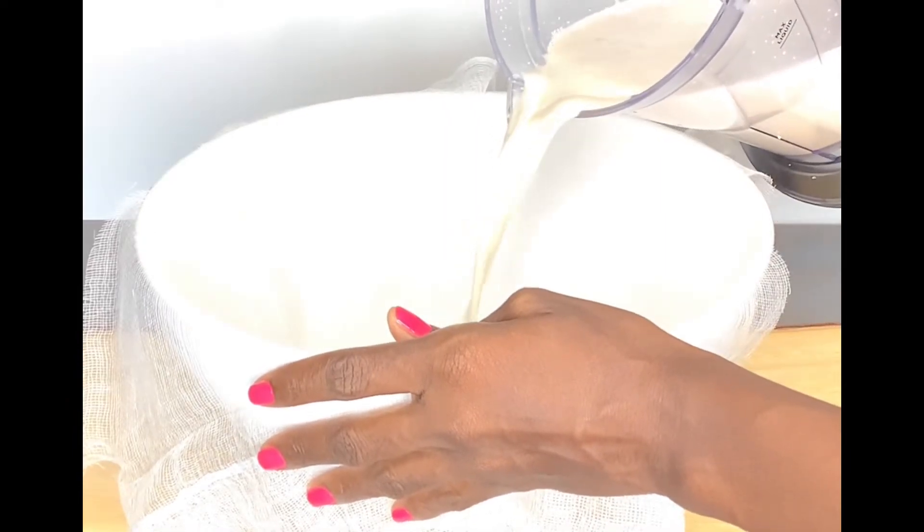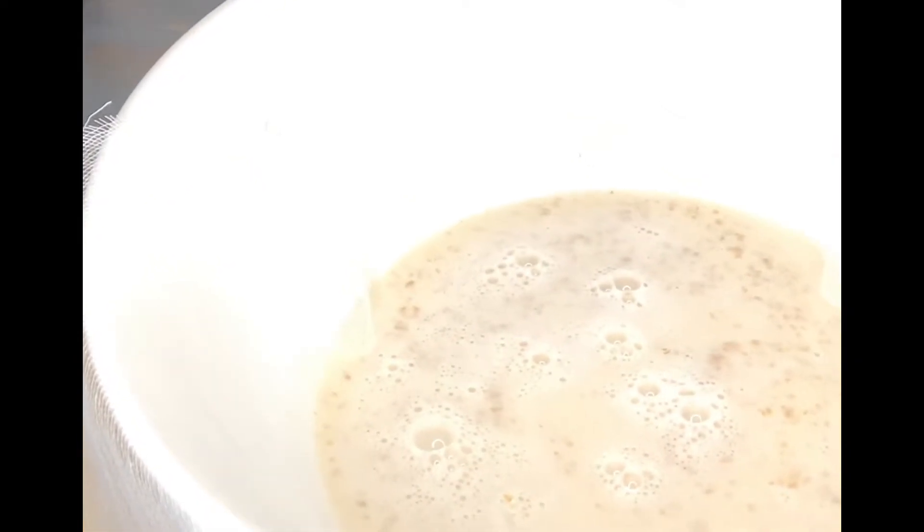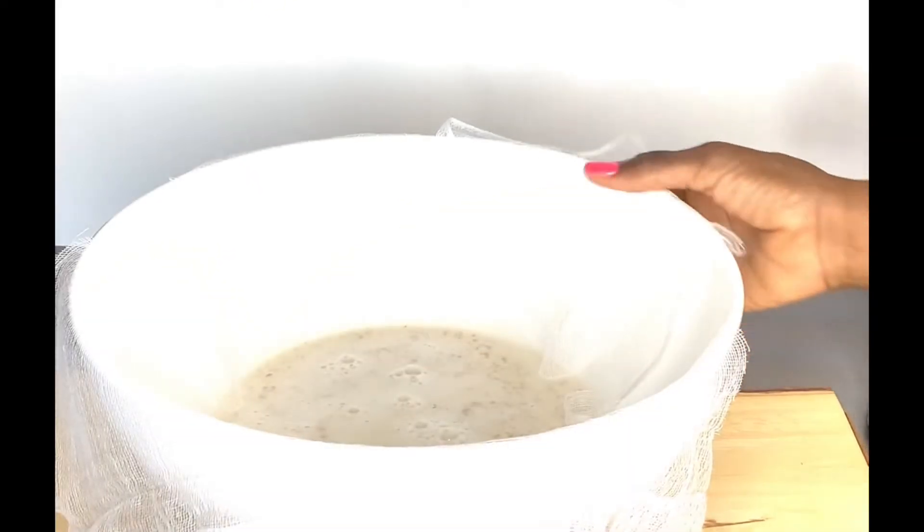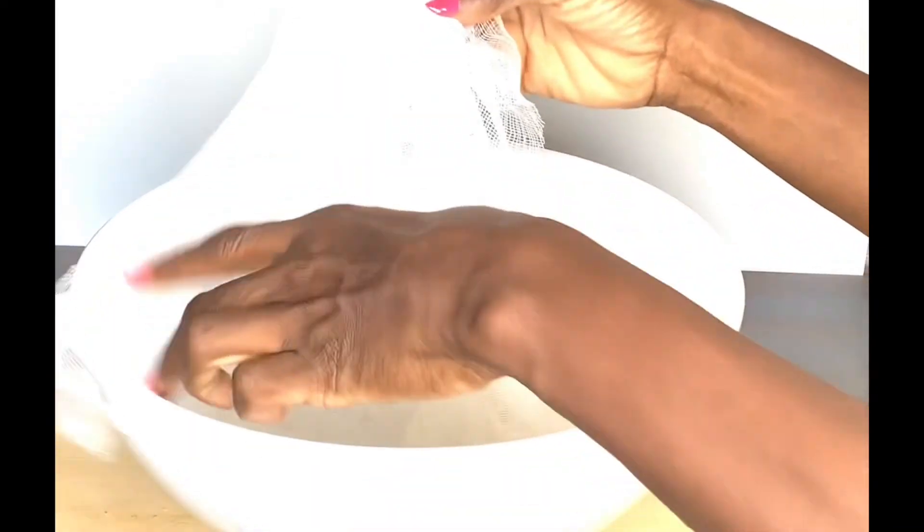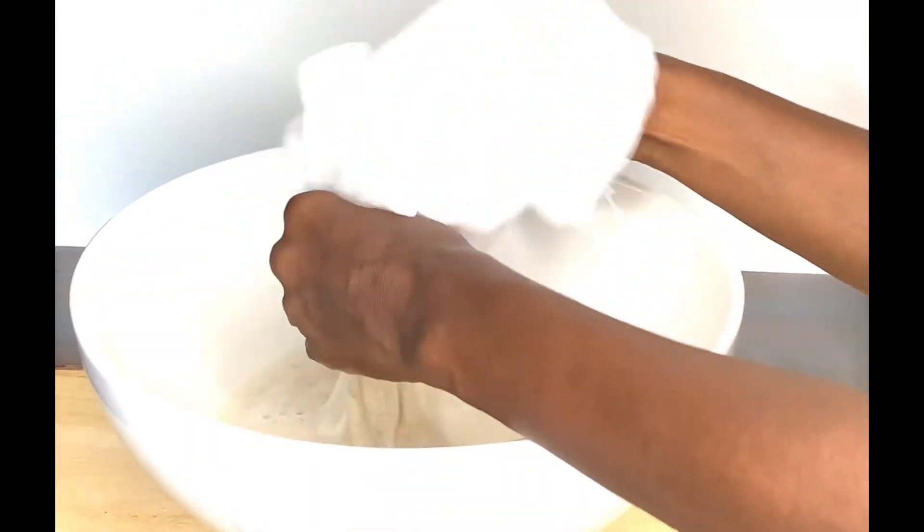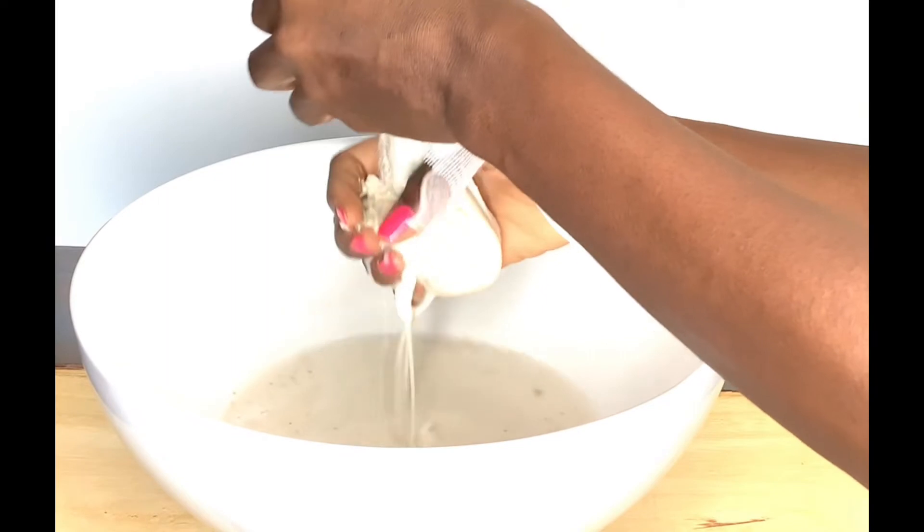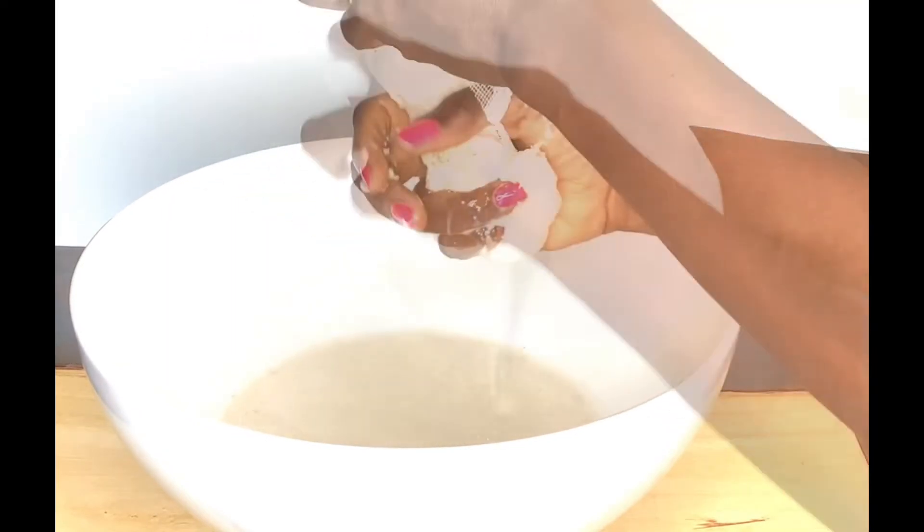So we'll go ahead, just want to show you how you are able to make it if you don't want to purchase the almond cow. We'll go ahead and just strain this off and squeeze it. Now you'll have to gather the cloth from around the bowl, and this will take place a few times until you actually get good clean milk.